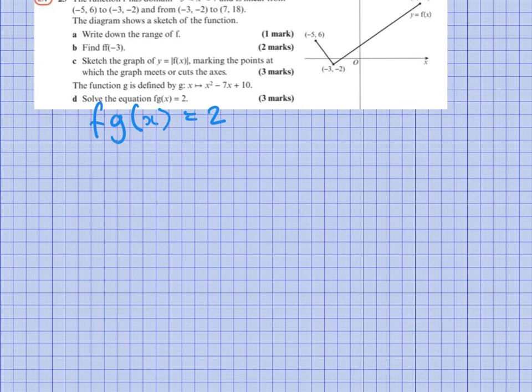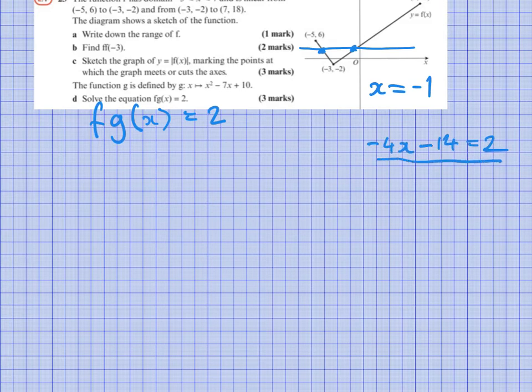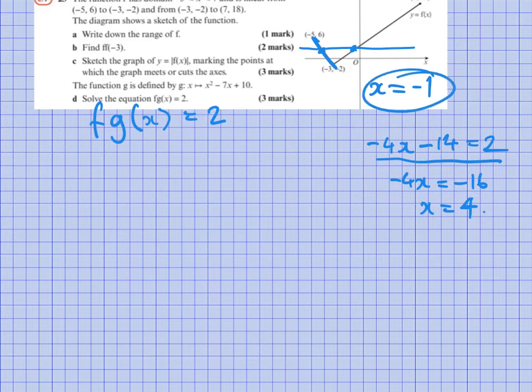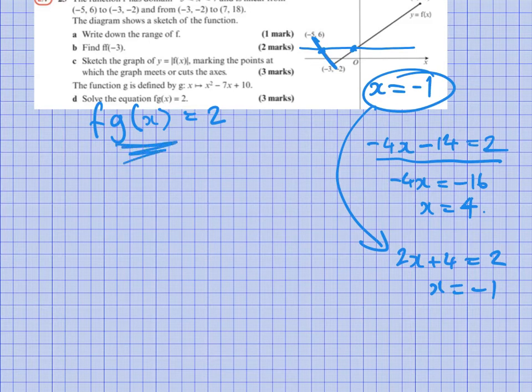If we remember, the value that would give us 2—there are two options. If I draw the line across here, we're looking for this point or this point. On this point here, that's when x = -1. And for this point here, I'll just quickly work that out. I need to solve the equation that we found for the line here, which is -4x - 14 = 2. So that gets me -4x = -16, so x = 4. So my values are -1 (that value I got by solving 2x + 4 = 2, which gives me x = -1).